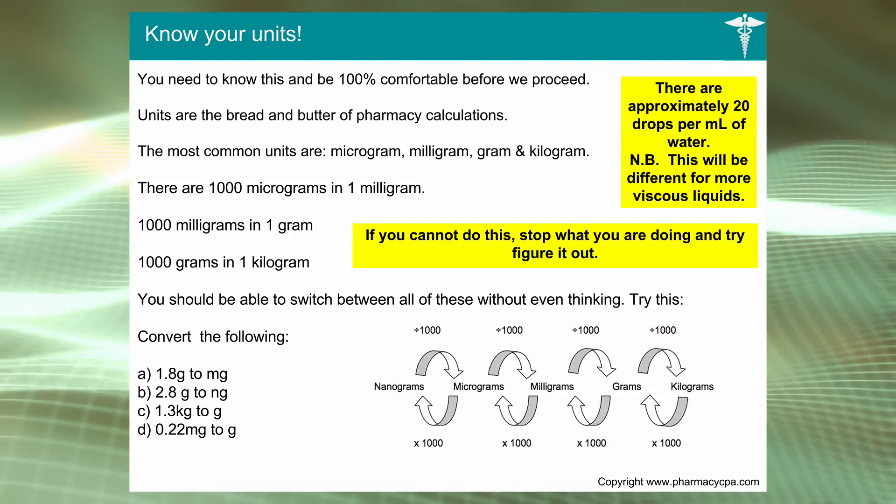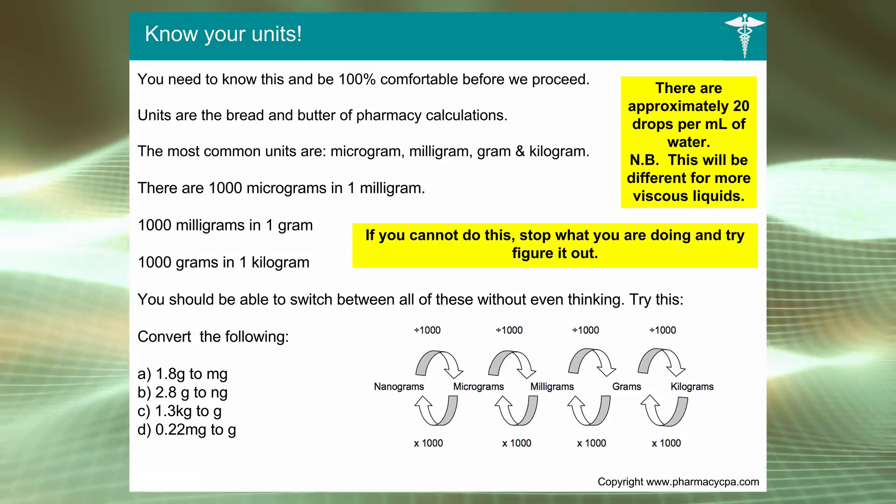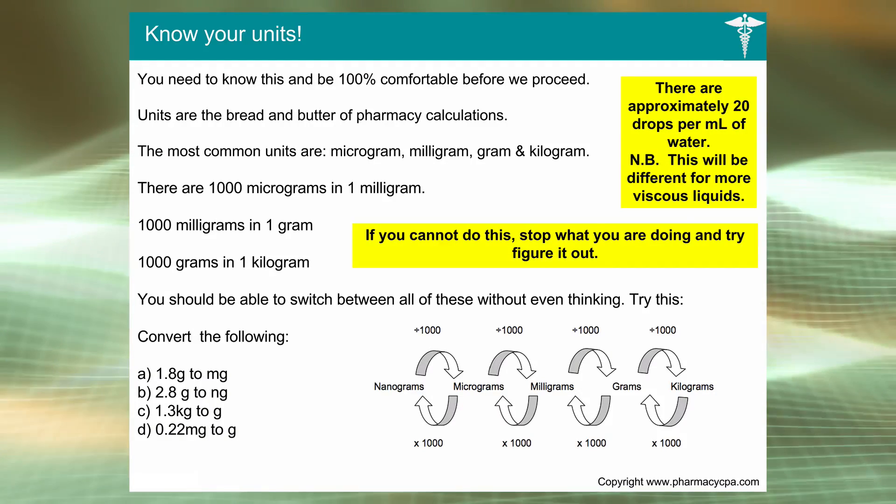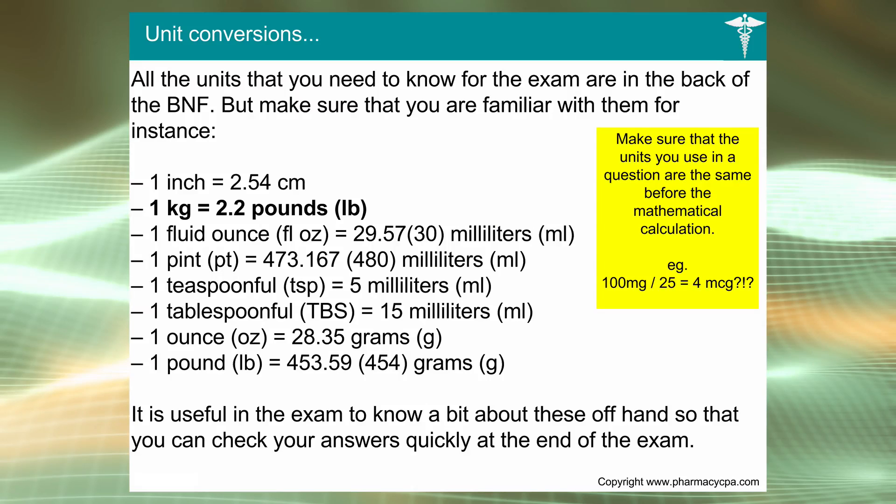This highlight here: if you cannot do this, stop what you're doing and figure it out. At the bottom there are some really easy quick examples. What is 1.8 grams to milligrams? Well, there's a lot of milligrams in grams, so 1800. Times by a thousand for nanograms you're going backwards. 1.3 kilograms is 1300 grams. 0.2 milligrams is 0.0002 grams. You probably won't ever see three zeros; they usually keep it between four, maybe five figures, but never really this length.